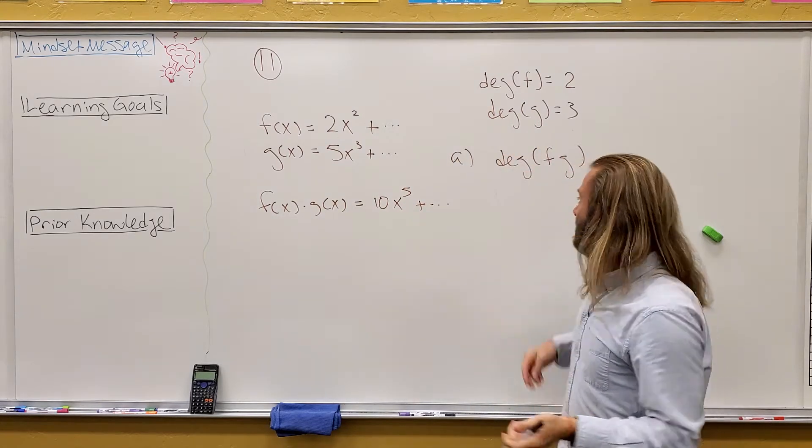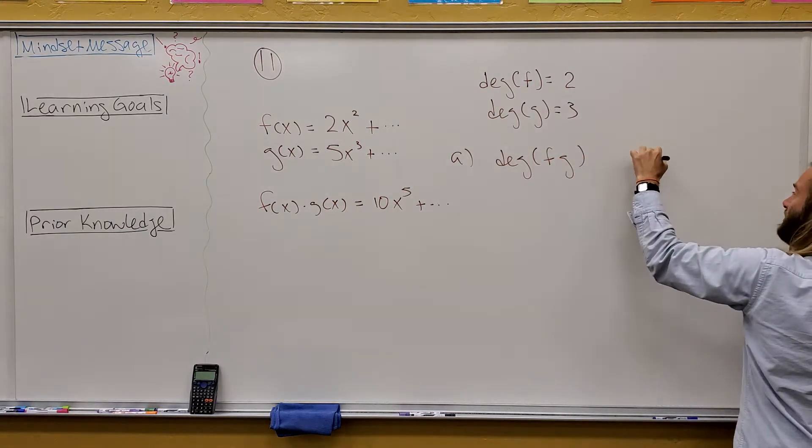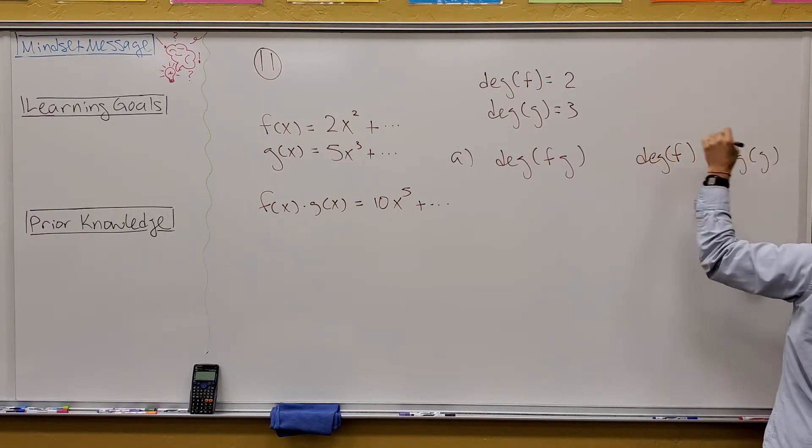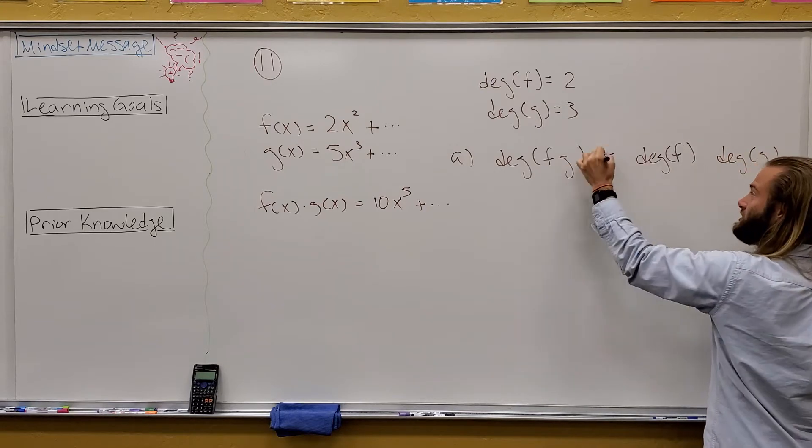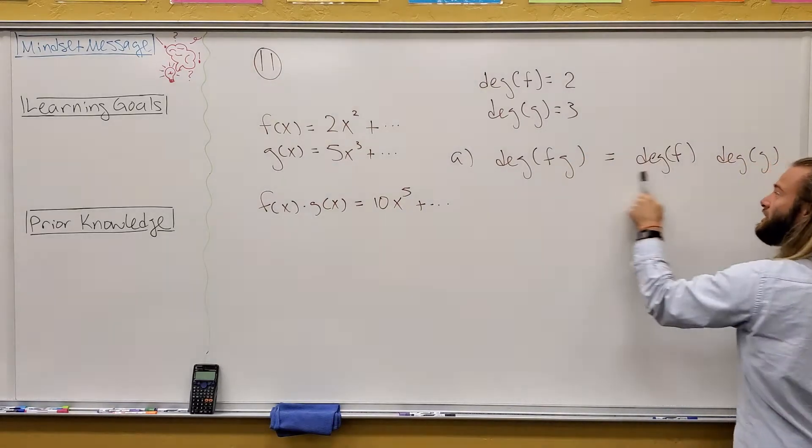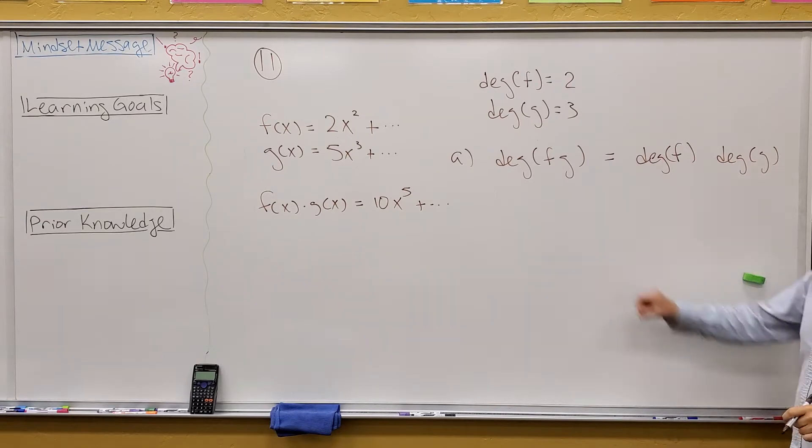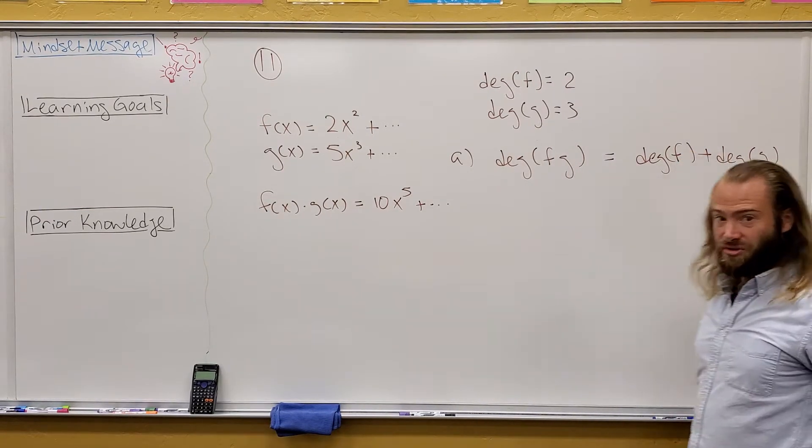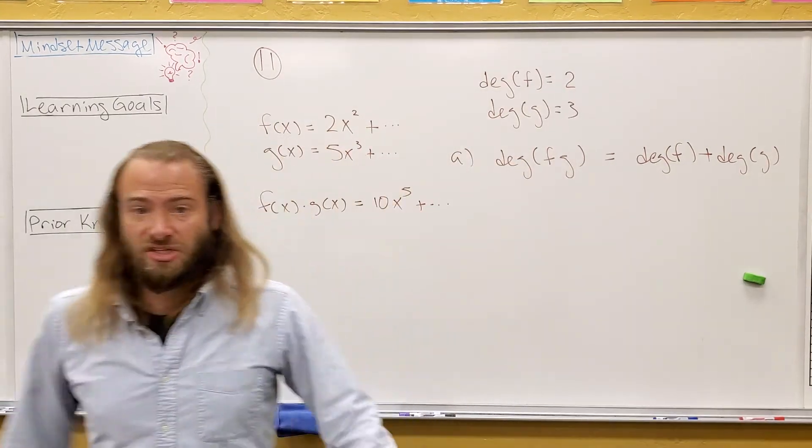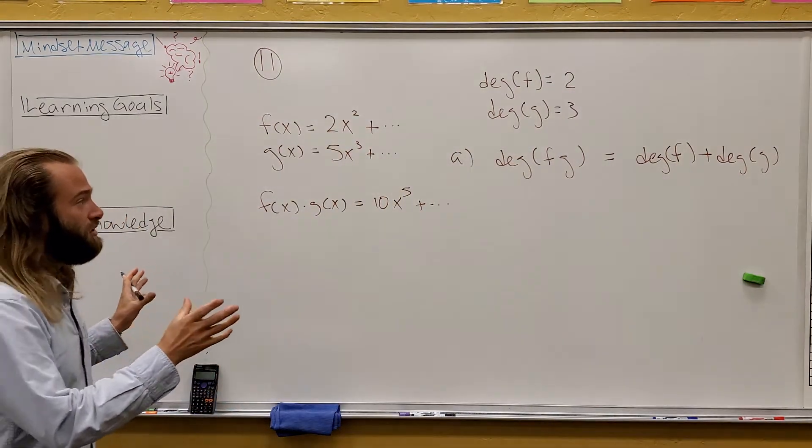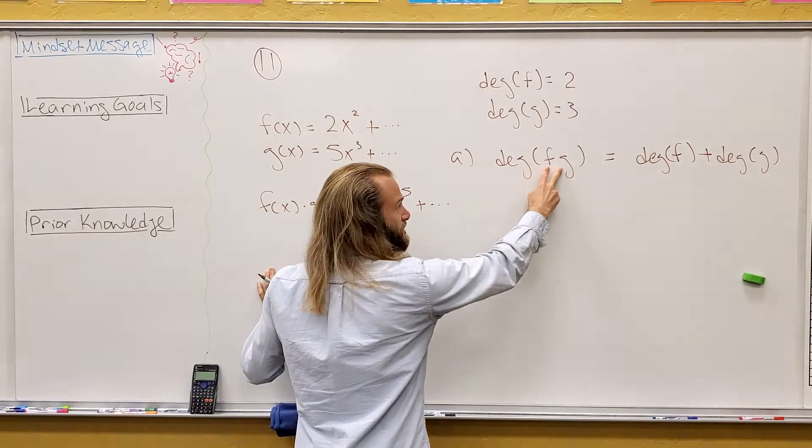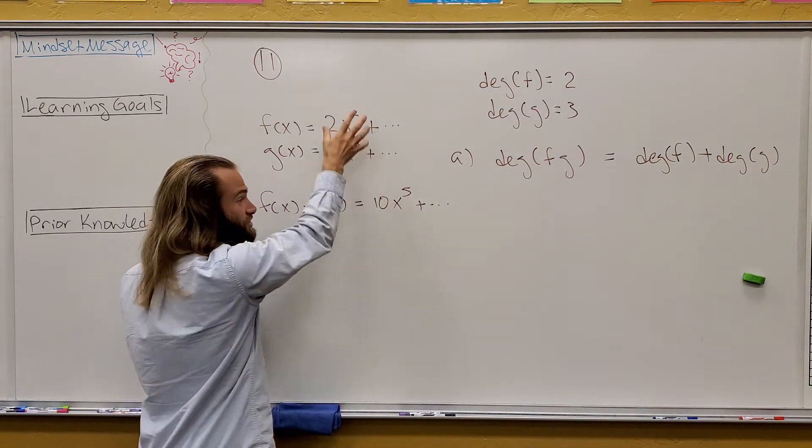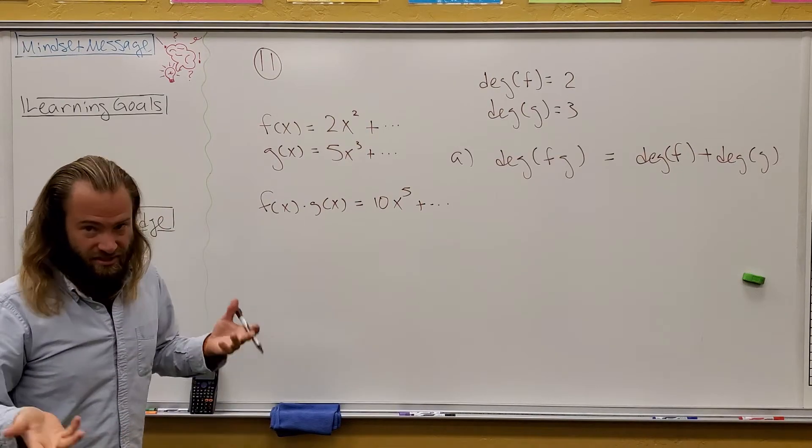So again, if I want to identify Deg F G and ask, well, how does it relate to Deg F and Deg G? What's the relationship between these? There's going to be some sort of equality between these and this. This guy's degree is the sum of those other two degrees. So again, if you actually do the operation, in this case multiplication, and then look at how did the degree relate to the original degrees, that's what this is asking, essentially.